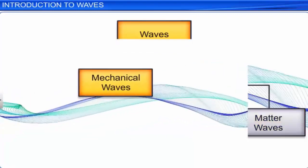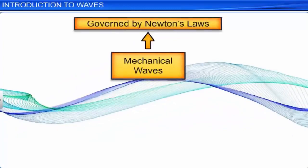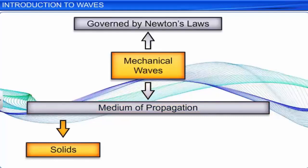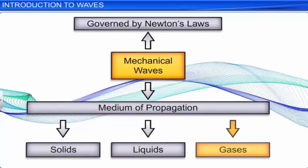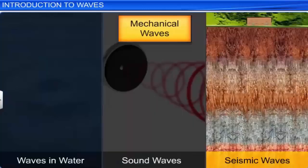Mechanical waves are governed by Newton's laws and need a medium to propagate, i.e., solids, liquids and gases or air. Waves in water, sound waves and seismic waves are some examples of mechanical waves.